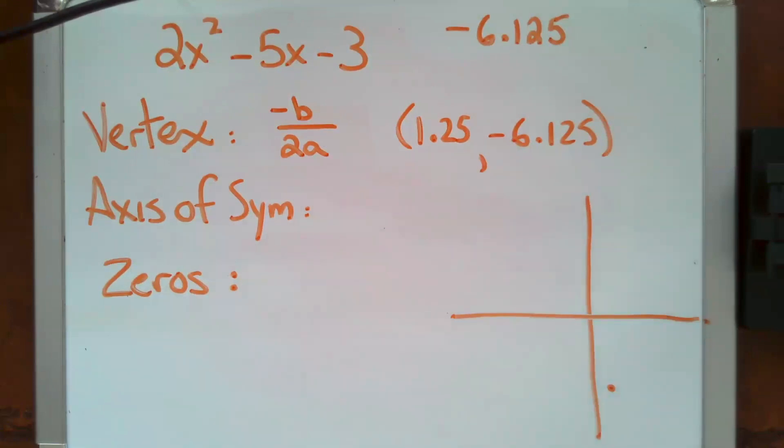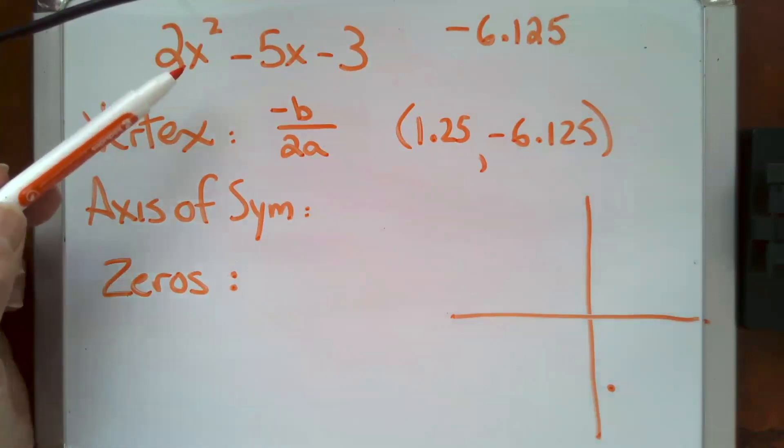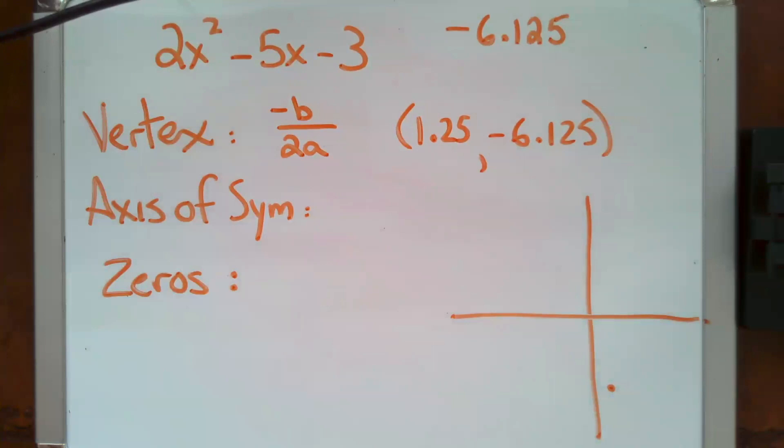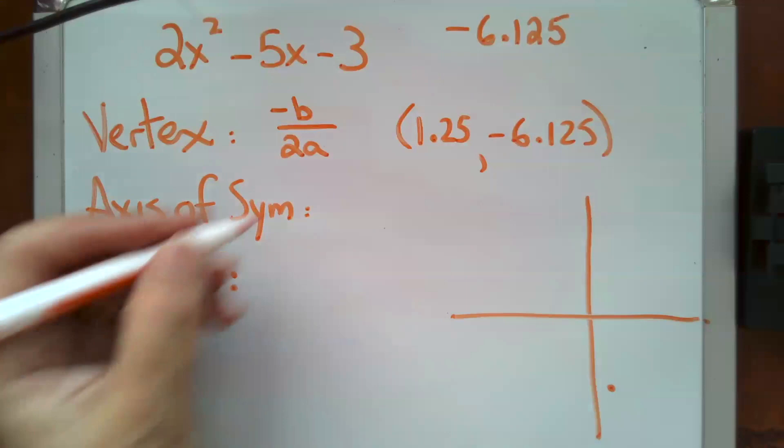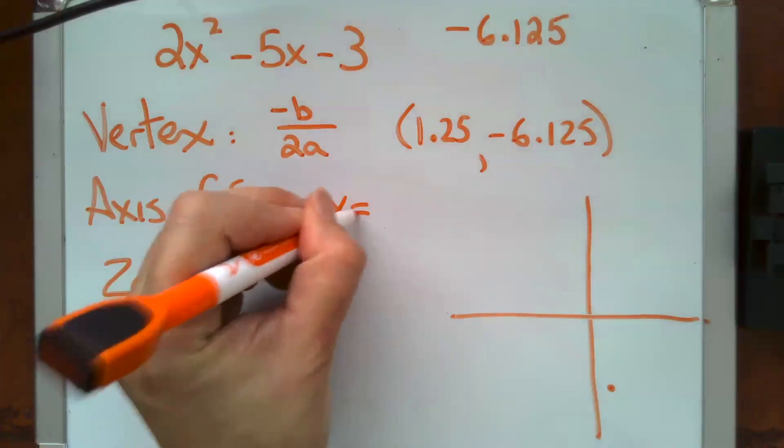Now, the axis of symmetry, first of all, that is a line. So it will always be in the form of x equals something or y equals something. When our parabola is written with the squared term as the x, that means it is opening in the vertical direction and our axis of symmetry will always be in x equals.